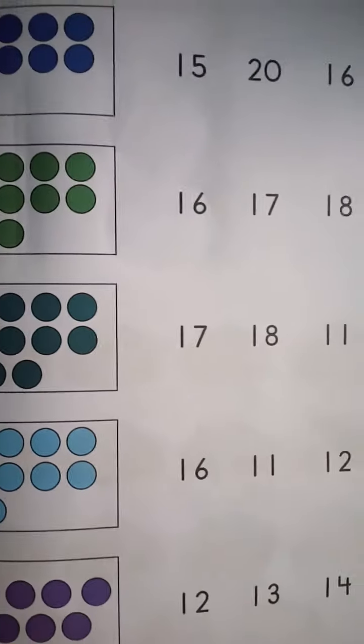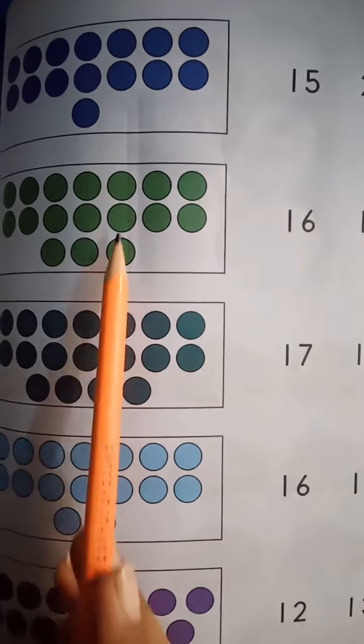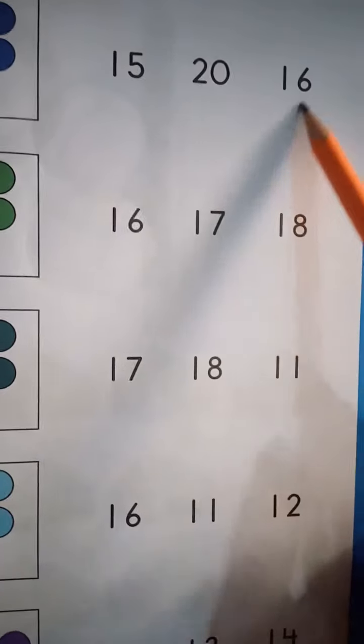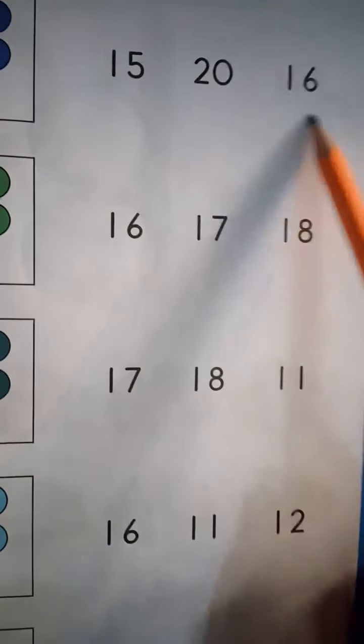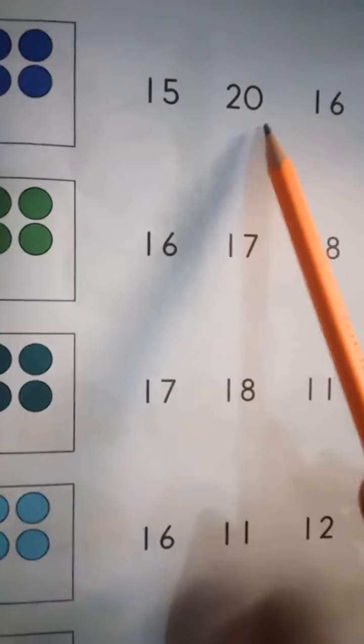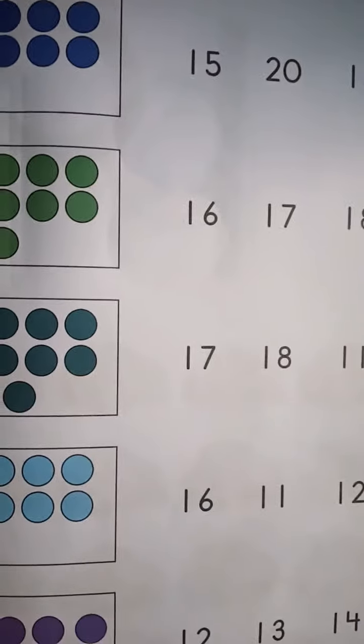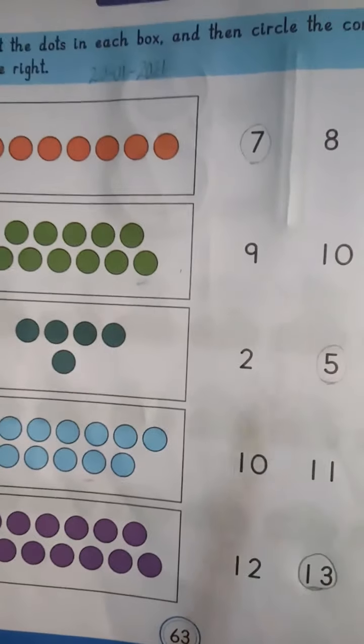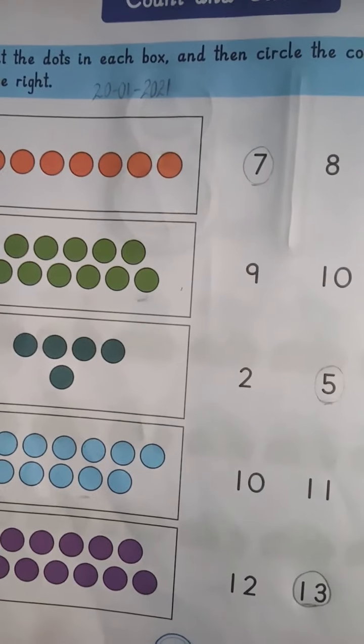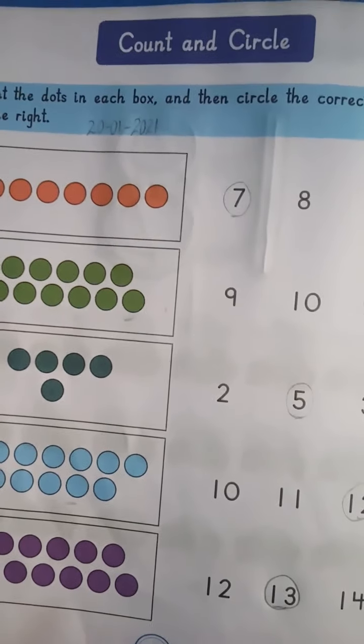So you can do this. Count the dots in each box, and on the right there are numbers. The correct one is what you should circle, as I have told you. This is the page. If you have any questions, please see this video. Okay, take care, Allah Hafiz.